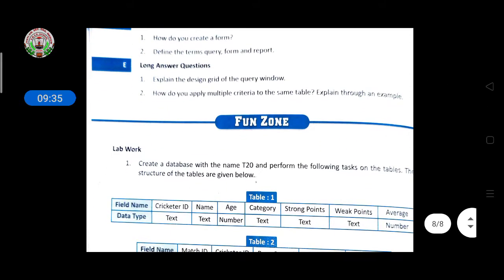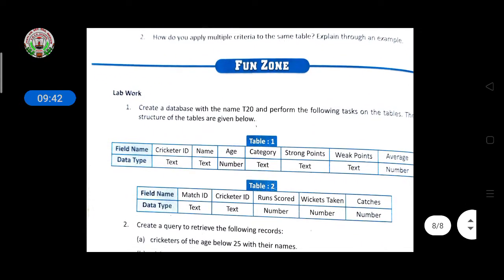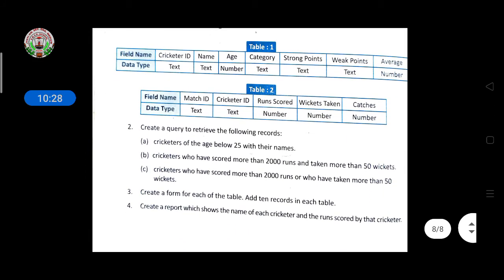After completing this chapter, I will start revision classes. For the lab work, a practical question is given here: create a database with the name T20 and perform the following tasks on the table. The structure of the table is given below with field names and data types. The field names are: Cricket ID, Name, Age, Criteria, Category, Strong Points, Weak Points, and Average. The data types are: Cricket ID — Text, Name — Text, Age — Number, and so on. We will discuss this question in the next class. Thank you.